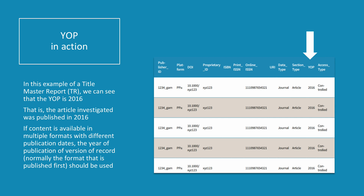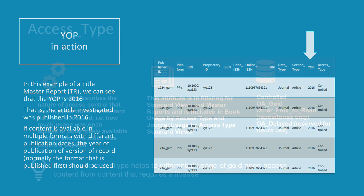The year of publication for the article is 2016. If content is available in print and online and the publication dates of the two formats differ, the year of publication of the version of record should be used. The version of record is normally the format that is published first.